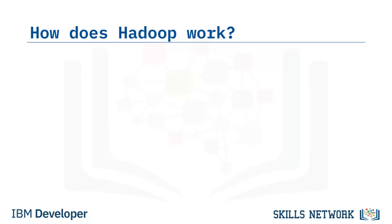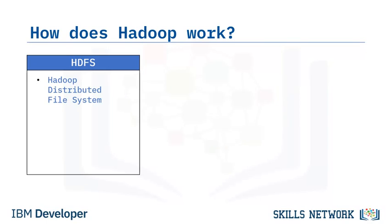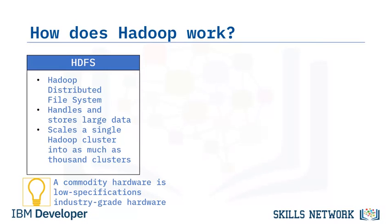Hadoop has individual components for storing and processing data. The term Hadoop is often used to refer to both the core components of Hadoop as well as the ecosystem of related projects. The core components include Hadoop Common, which is an essential part of the Apache Hadoop framework referring to the collection of common utilities and libraries that support other Hadoop modules. There is also a storage component called Hadoop Distributed File System, or HDFS, which handles large datasets running on commodity hardware — low-specification, industry-grade hardware — and scales a single Hadoop cluster to hundreds or even thousands of nodes.